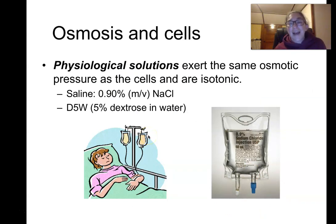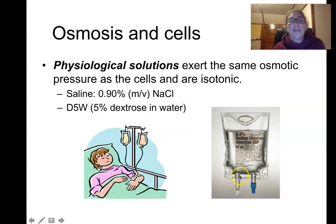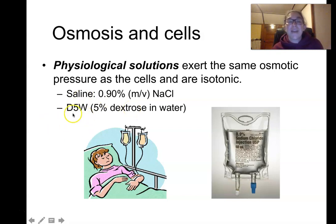This is why IV solutions must be isotonic to body fluids. You never want to put pure water into someone's veins — that would be hypotonic and cause hemolysis. IV saline is 0.9% sodium chloride, which matches the physiological concentration of NaCl in blood and is therefore isotonic. Similarly, 5% dextrose solution matches the normal blood glucose concentration — dextrose being another word for glucose.